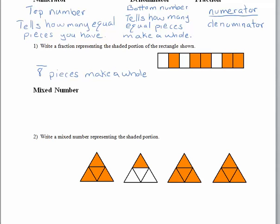They want to know what fraction is shaded, so we'll count those: one, two, three, four, five. That's five pieces we have.